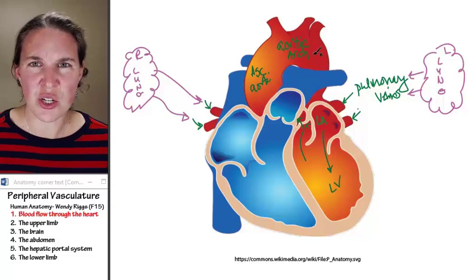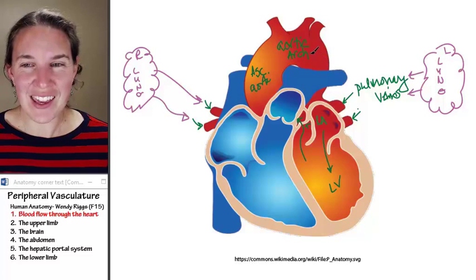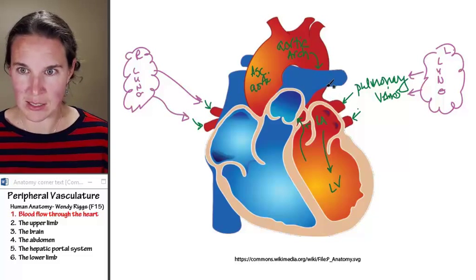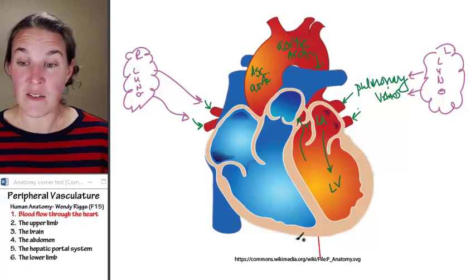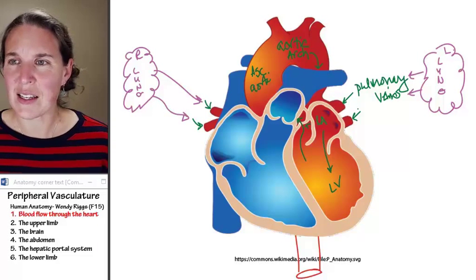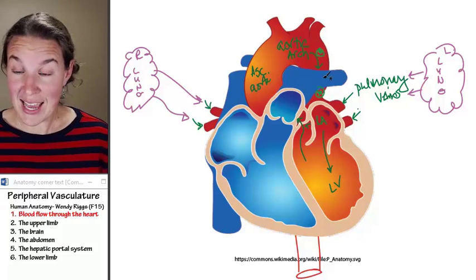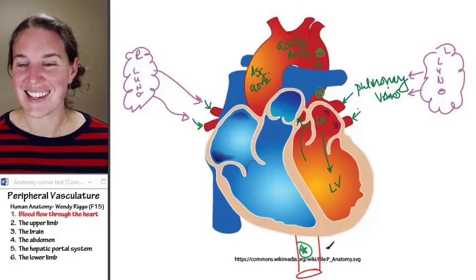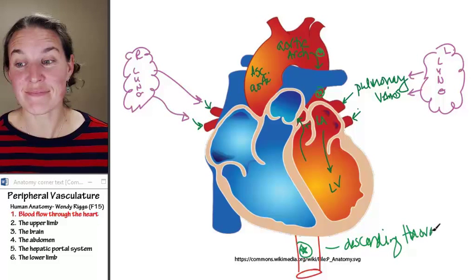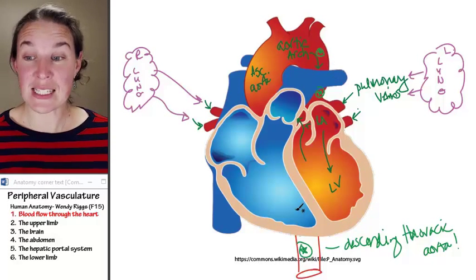The ascending aorta goes up, the arch makes an arch. The vessel actually travels behind the heart but is continuous. That next section, traveling down behind the heart, is the descending thoracic aorta. So we have: ascending aorta, aortic arch, descending thoracic aorta.